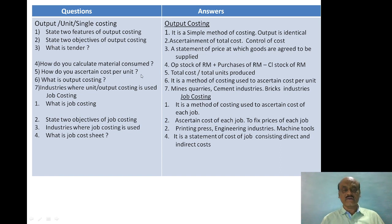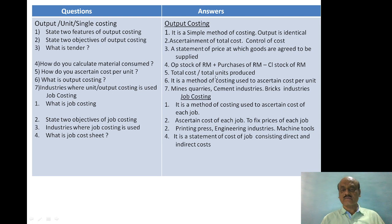How do you ascertain cost per unit? Cost per unit is calculated by dividing the total cost by total units produced. Formula: Cost per unit = Total cost ÷ Total units produced.